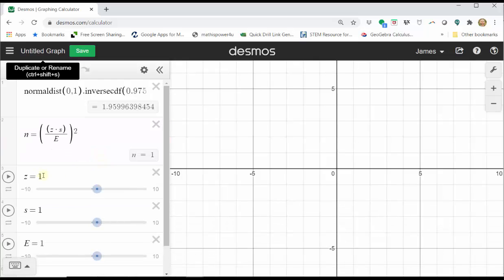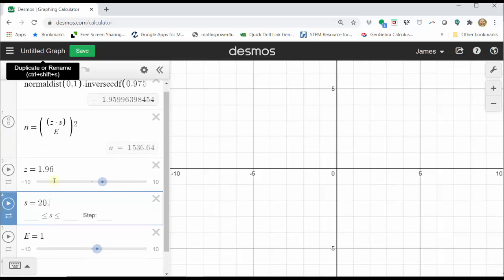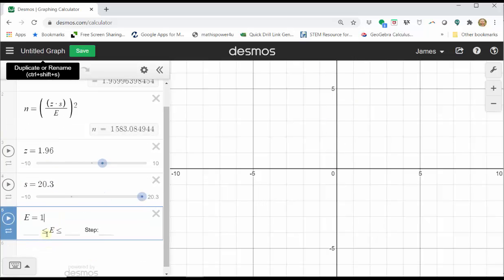Click all. And now we enter the z-score, the standard deviation, and the error. The z-score is 1.96. The standard deviation is 20.3. And the error is 2.5. Notice n is automatically calculated.